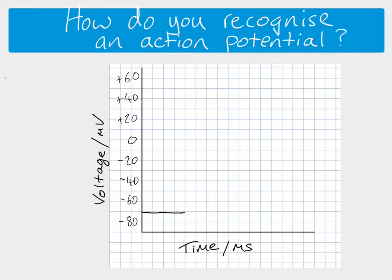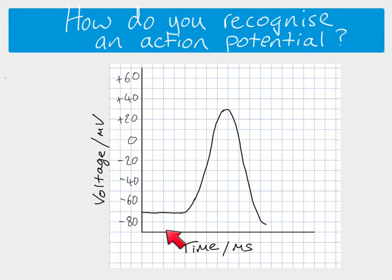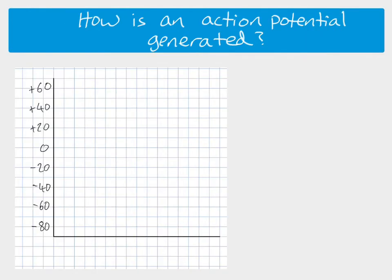Depolarization means that the voltage is going to become more positive. If the stimulus is strong enough, an action potential is generated. It shoots all the way up to around plus 30 millivolts, and then moves straight back down again, actually getting below the resting potential to about minus 80 millivolts — that's our undershoot phase. Then it moves back up and the resting potential is maintained again. So this very rapid increase in voltage is an action potential. We need to understand how it's generated in terms of the movement of ions across the membrane of the neuron.